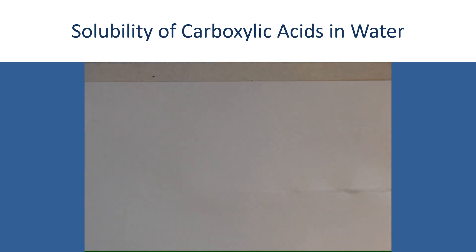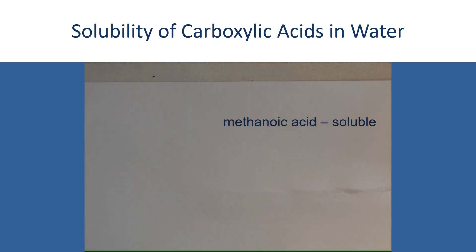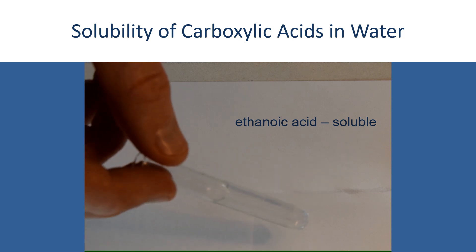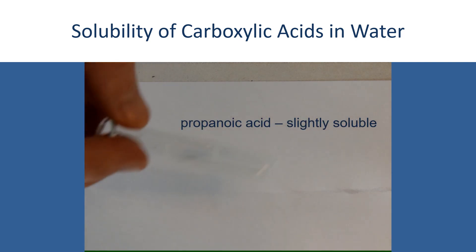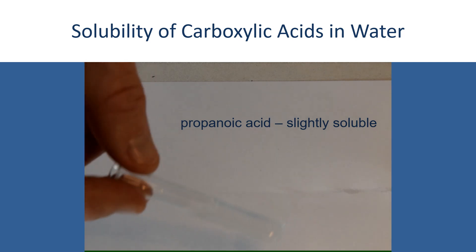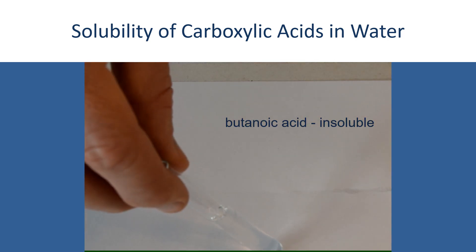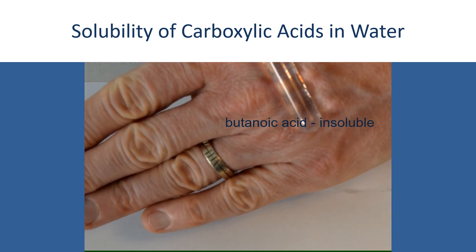So if I move these out of the way so that we can have another look at them in front of the camera: the methanoic acid there has completely dissolved in the water. The ethanoic acid — you can see the cloudiness has disappeared and it's become completely miscible in the water; the ethanoic acid is also soluble in water. Propanoic acid has started to become miscible with the water, but it's less soluble — clearly less soluble than the methanoic and ethanoic acids. And finally, the butanoic acid is sitting as a layer there; you can see it's sitting as a layer on top of the water — this is insoluble.